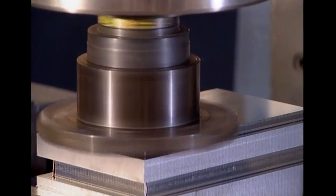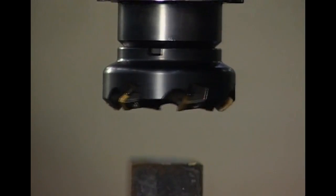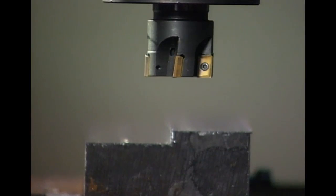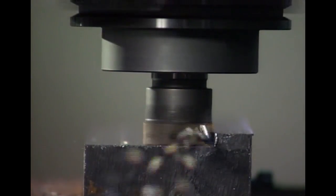The milled surface results from the combined action of cutting edges located on the periphery and face of the cutter. The flat milled surface has no relation to the contour of the individual teeth, except when milling a shoulder.